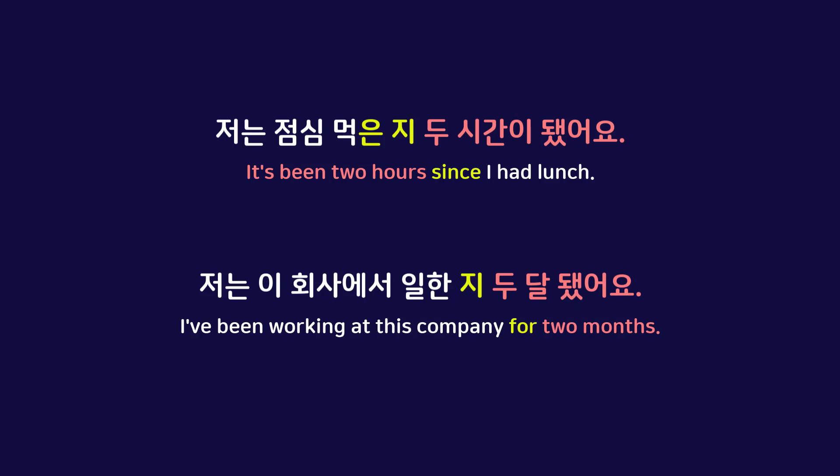When we add 은지 to verbs, it depends on whether the verb stem ends in 받침 or not. If a verb stem ends in 받침, we add 은지 to the verb stem. For example, 먹다 ends in 받침, so it becomes 먹은지.